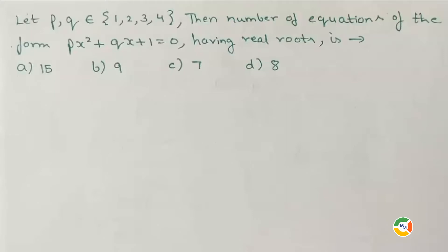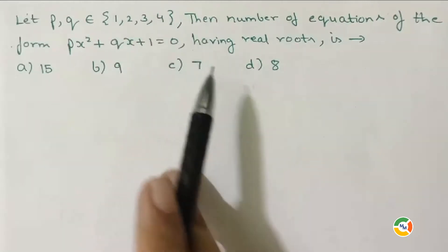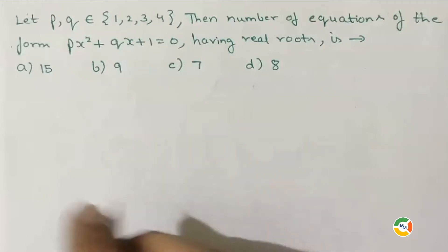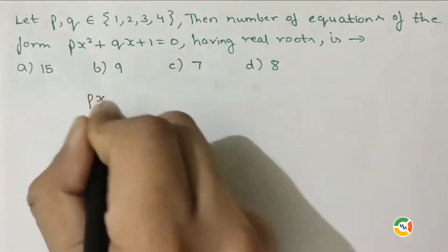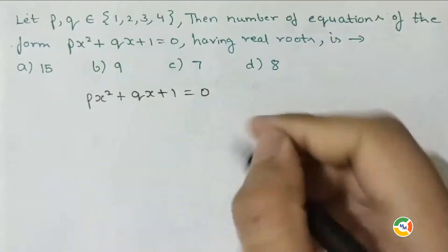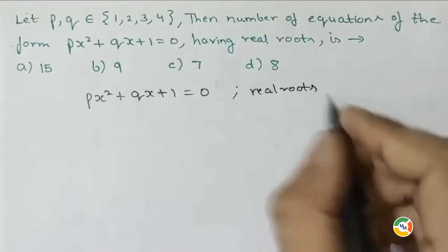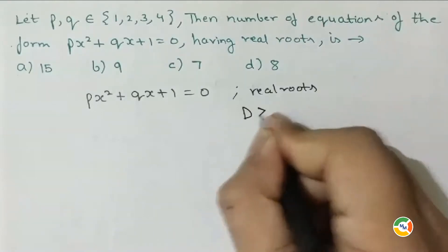Let p and q belong to {1, 2, 3, 4}. We need to find the number of equations of the form px² + qx + 1 = 0 having real roots. Since the equation has real roots, the discriminant should be greater than or equal to zero.